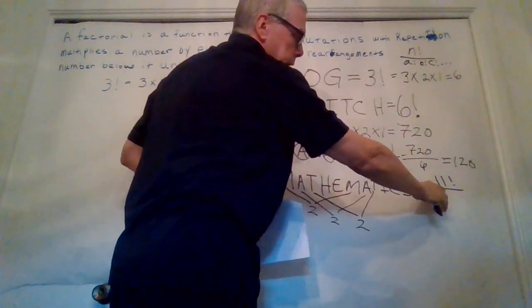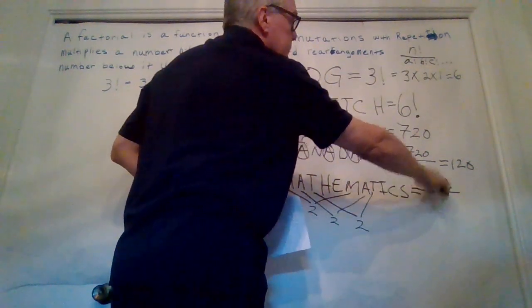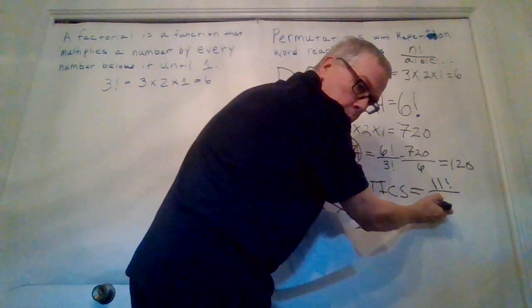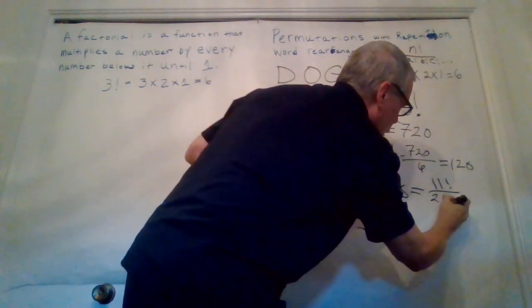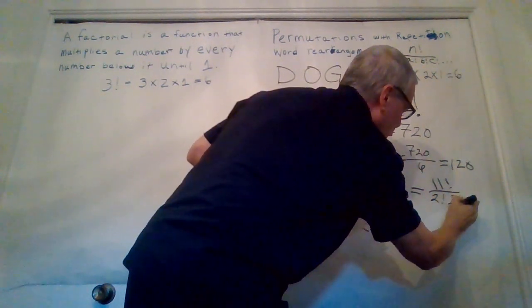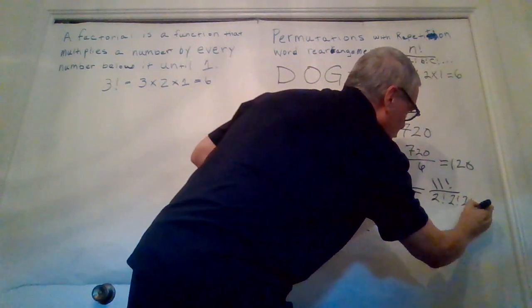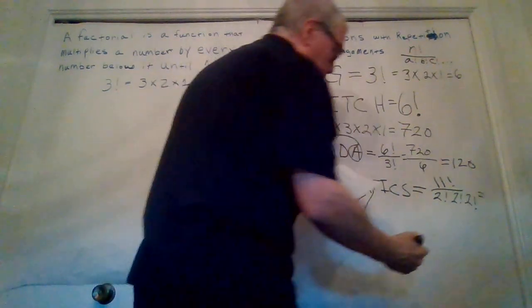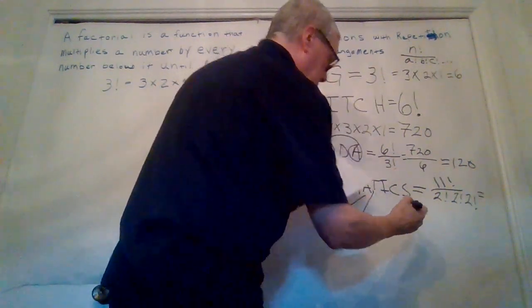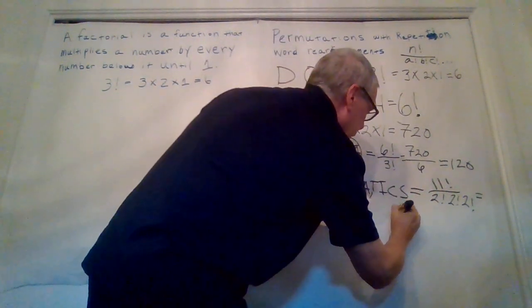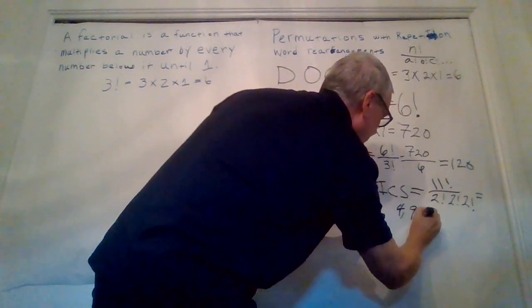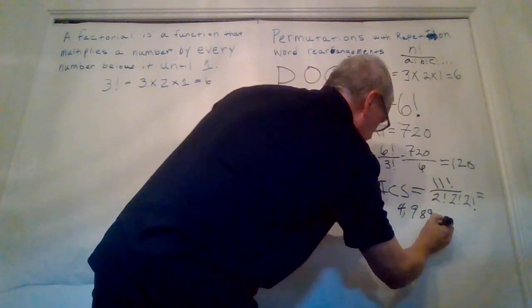So using our formula up here, we have N factorial, which is 11 factorial. Now we will repeat it by two factorial times two factorial times two factorial. And that is going to equal, I'm going to need a calculator for this one. It's going to equal 4,989,600.